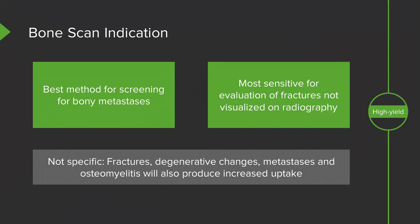However, bone scans are not very specific. Anything such as a fracture, degenerative changes, metastases, or even osteomyelitis will produce increased uptake. So when you see increased uptake on a bone scan, it's hard to differentiate what may be going on, and the clinical scenario has to really be taken into account.